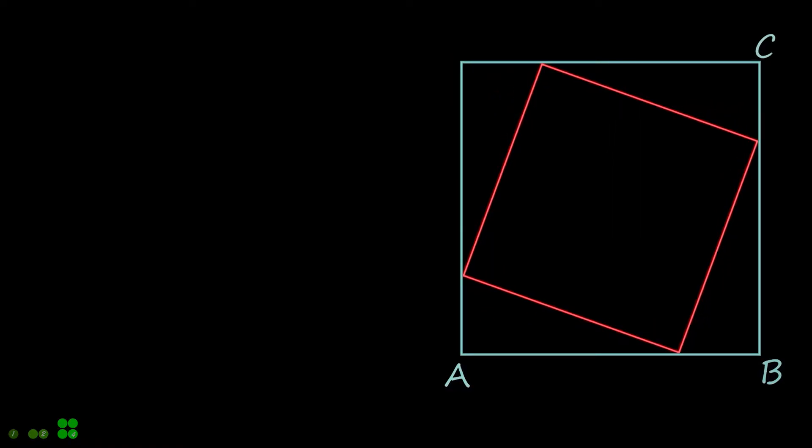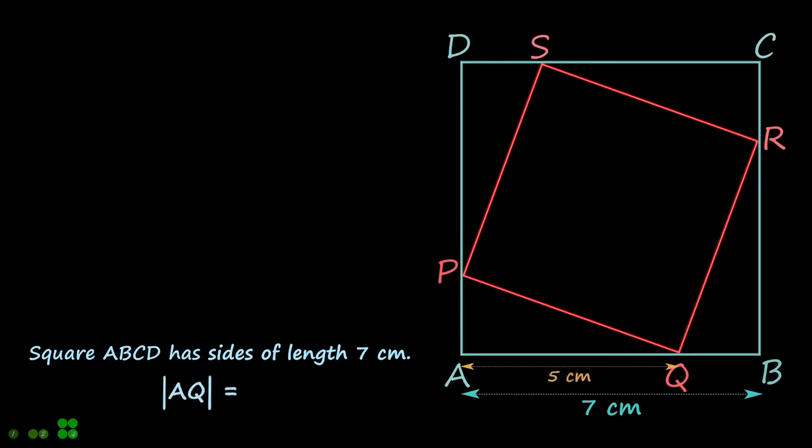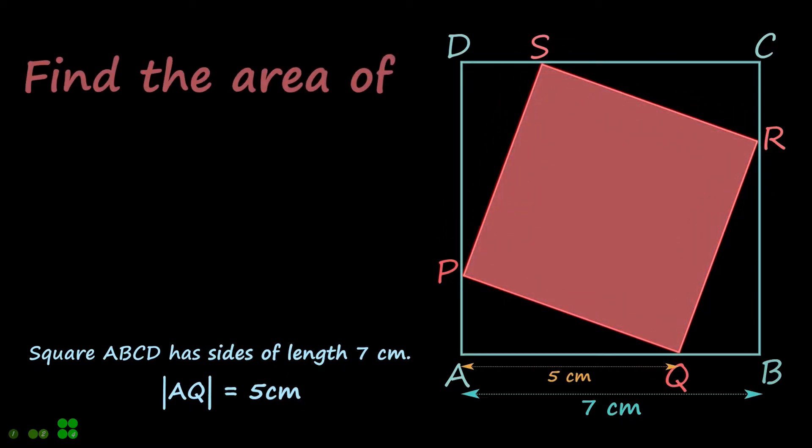A square ABCD has sides of length 7 cm. The vertices of the square PQRS lie on the perimeter of the square ABCD and AQ equals 5 cm. Find the area of the square PQRS.